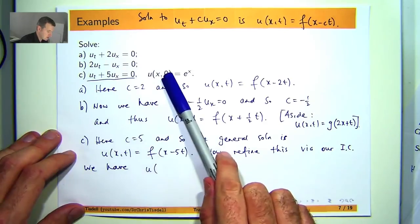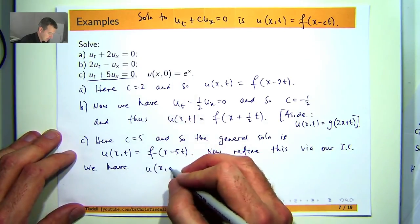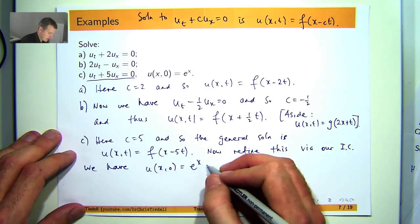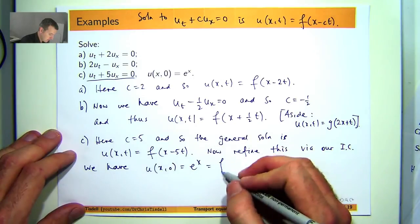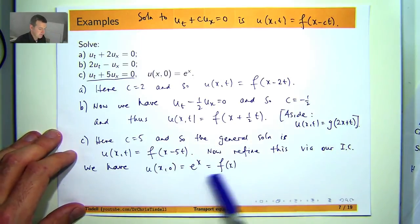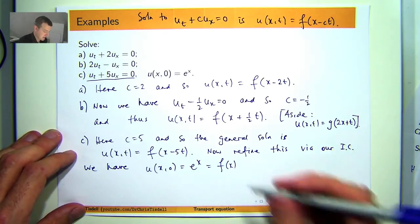So by IC I mean initial condition. So when t equals 0, u the solution is just the exponential function. So let's go to our general form, plug in t equals 0 and see what we get. Well that will disappear and we'll get f of x. So if you compare these two things, our arbitrary function f in this case will be narrowed down to an exponential function.